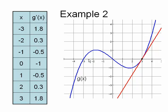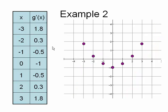So now that I've got my points, let's go ahead and graph them. So at negative 3, about 1.8. Negative 2, about 0.3. Negative 1, negative 0.5. At 0, about negative 1, at 1, about negative 0.5, 2, about 0.3, and at 3, about 1.8.